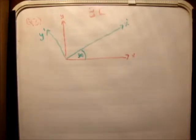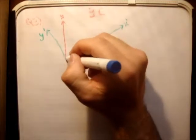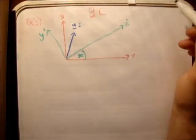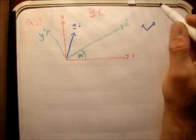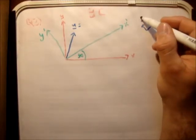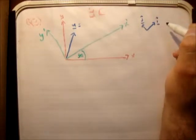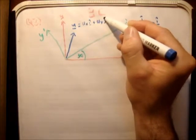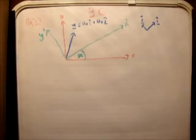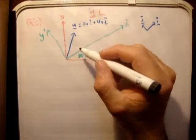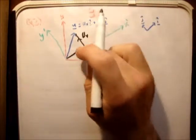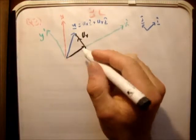The next thing we need to do is draw in the initial velocity vector u. I'm going to define unit vectors parallel to the x-prime y-prime plane — this is j-hat and this is i-hat. So u equals u-sub-x i-hat plus u-sub-y j-hat. In order to resolve vector u, we need to find the two vectors parallel to the x-prime and y-prime axes that add together to create u. This gives us u-sub-y parallel to y-prime, and u-sub-x parallel to x-prime.